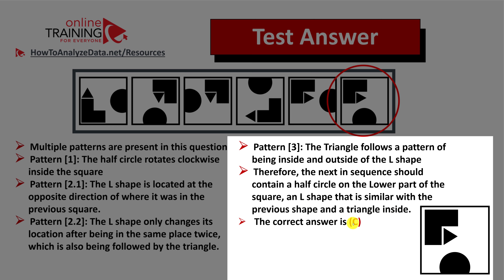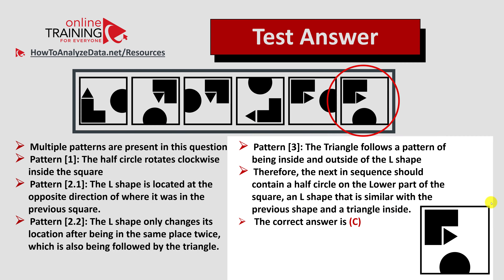Therefore, the next item in the sequence contains a half-circle in the lower part of the square, with the L-shape similar to the previous shape and the triangle inside. The correct answer is choice C. Hopefully you understand what to look for in similar questions on the test.